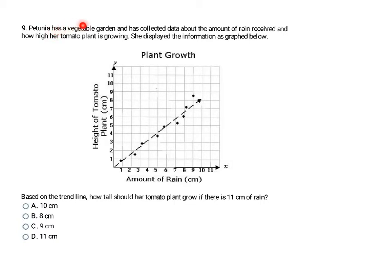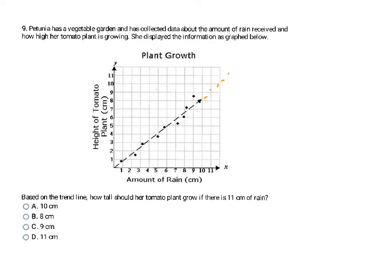In this problem, they're looking at Petunia's vegetable garden — specifically the amount of rain received and how high her tomato plants grow. They have a scatter plot with a line of best fit already drawn. Based on that trend line, they ask how tall the tomato plant should grow if they get 11 centimeters of rain. At 11 centimeters of rain, I go up and continue the line — at 11 centimeters it's going to be around 9 centimeters tall. So my answer is going to be C.